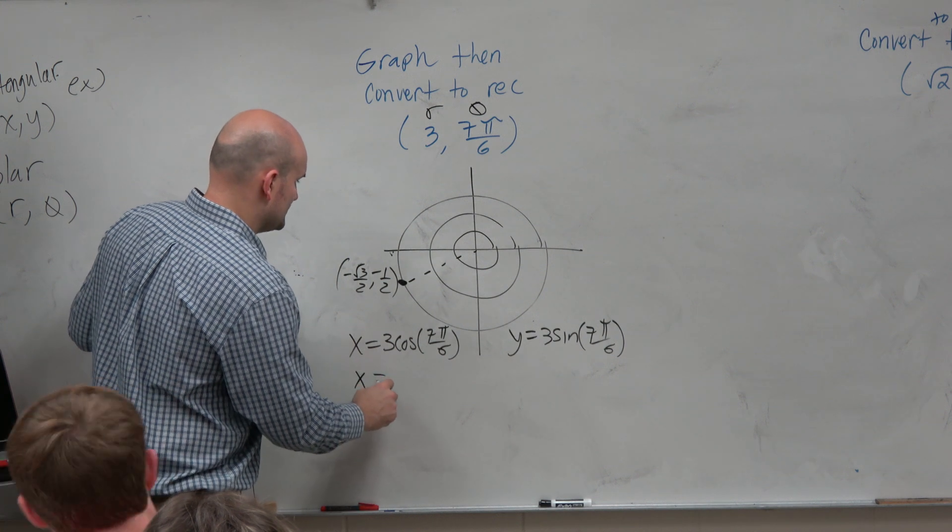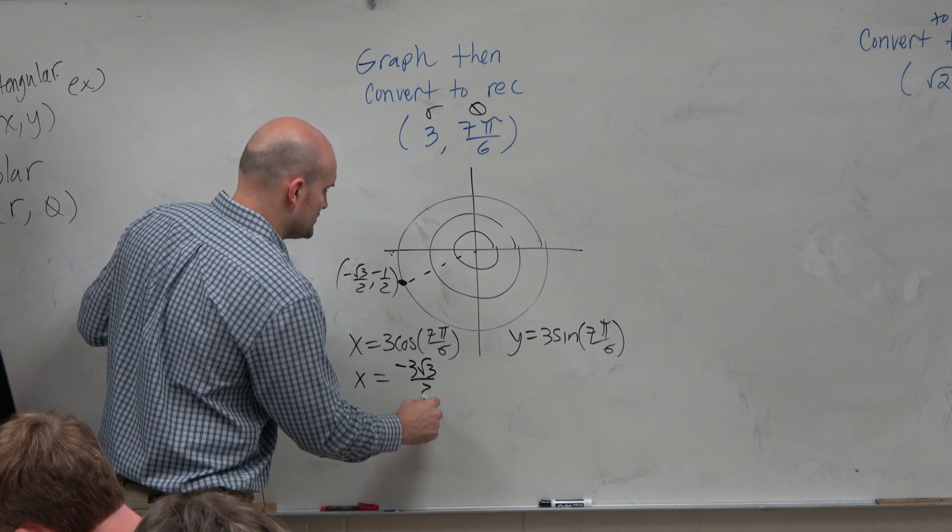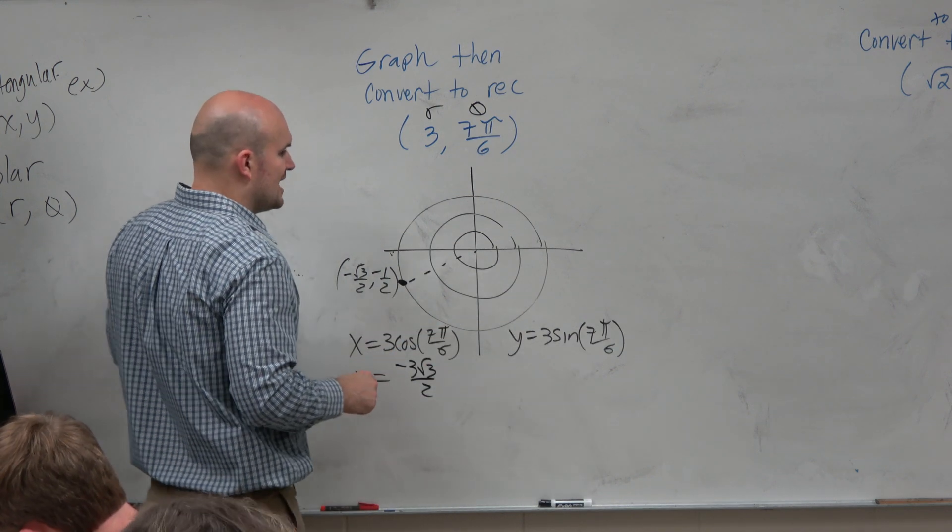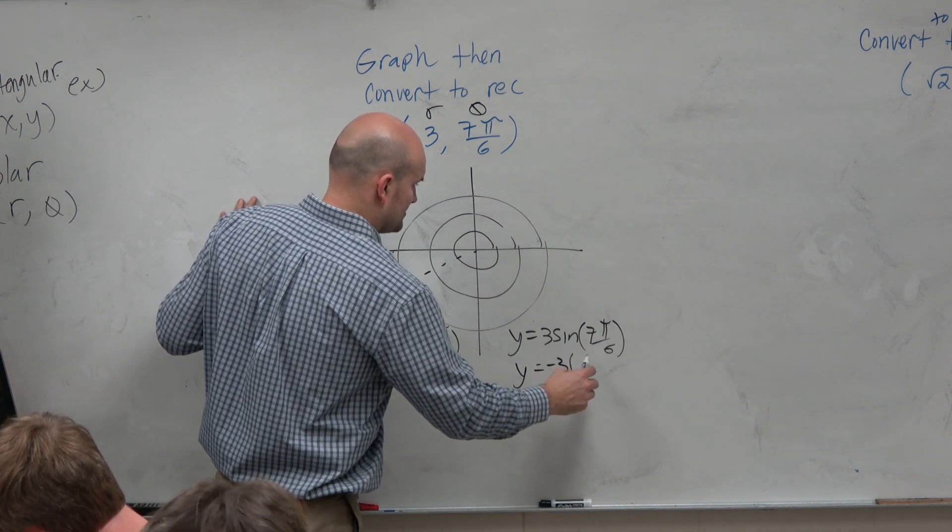So therefore, x is equal to, that's going to be a negative square root of 3 over 2. So that's going to be negative 3 square root of 3 over 2. And sine is going to be a negative 1 half. So that would be y equals negative 3 times 1 half.